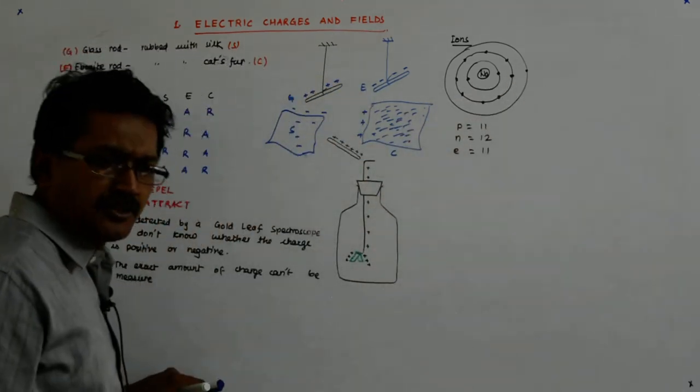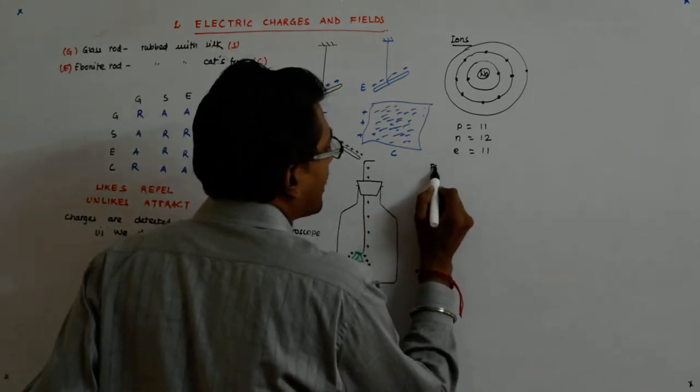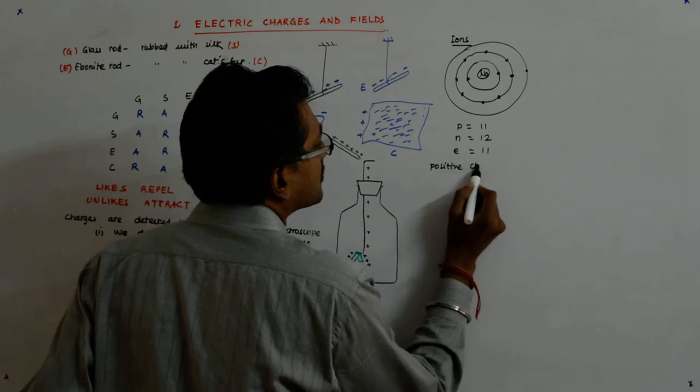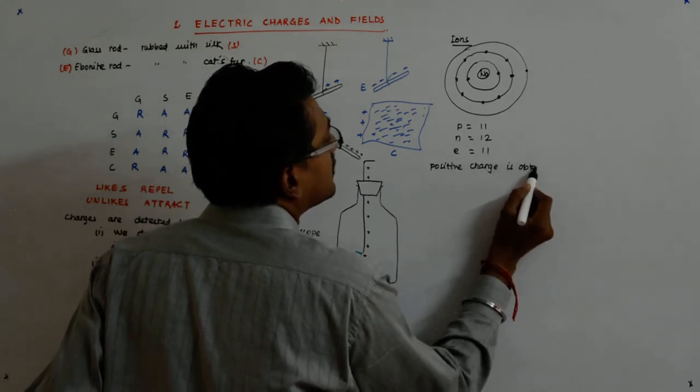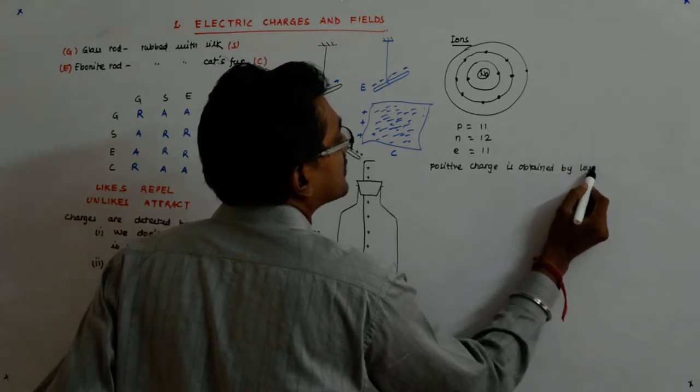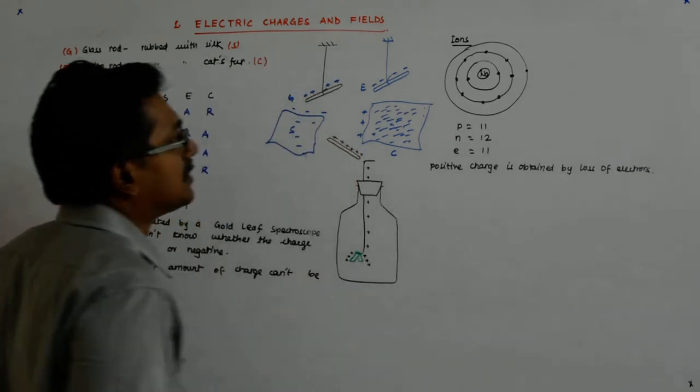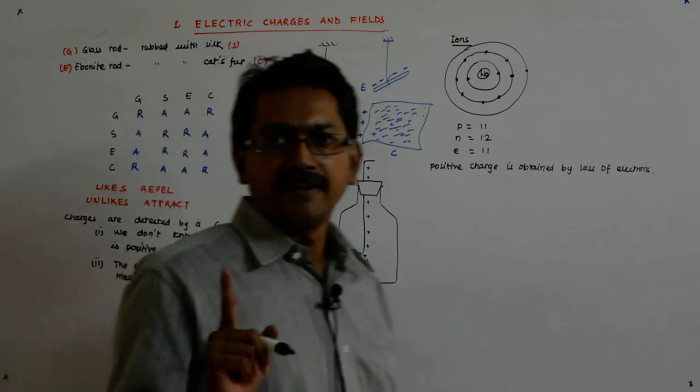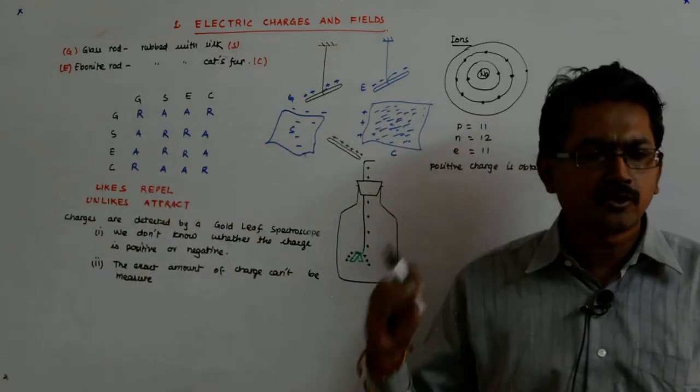How do you get a positive charge? The positive charge is obtained by loss of electrons. Let us mind it. We have protons. You can say it could be by the gain of protons.